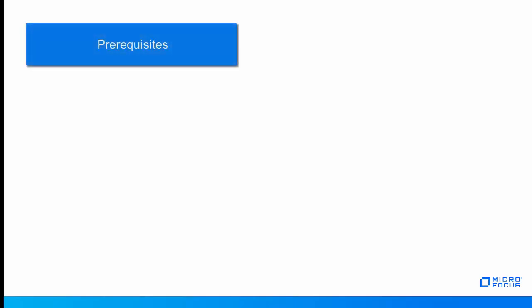Let us now look into the prerequisites required for configuring multi-factor authentication on OpenVPN. Ensure that OpenVPN is installed, and ensure that Advanced Authentication version 6.2 is installed.